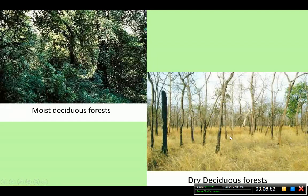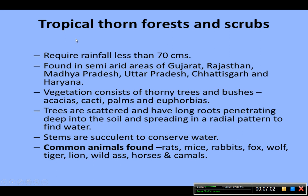Tropical thorn forests and scrubs require rainfall less than 70 centimeters annually. They are found in semi-arid areas of Gujarat, Rajasthan, Madhya Pradesh, Uttar Pradesh, Chhattisgarh, and Haryana.